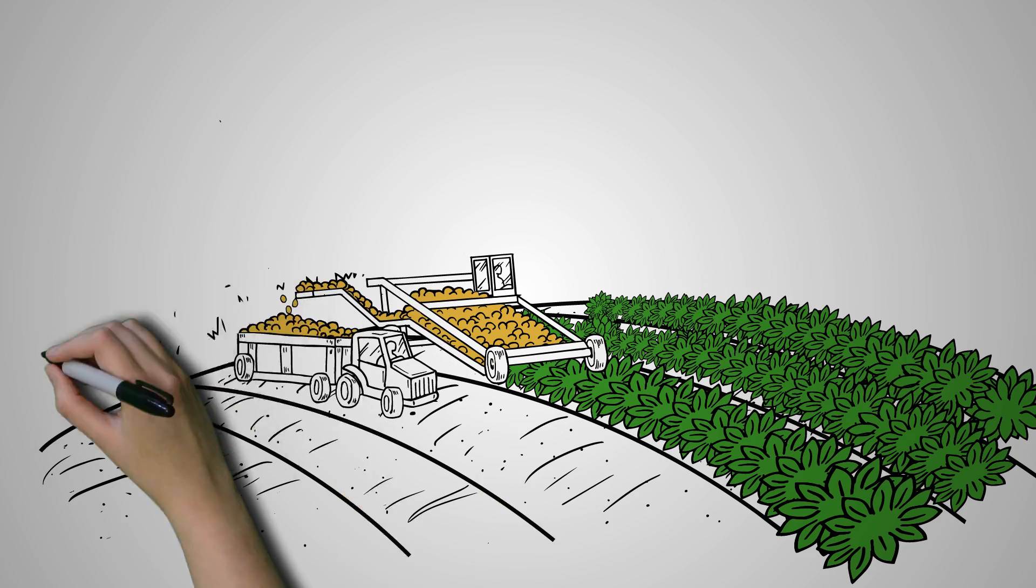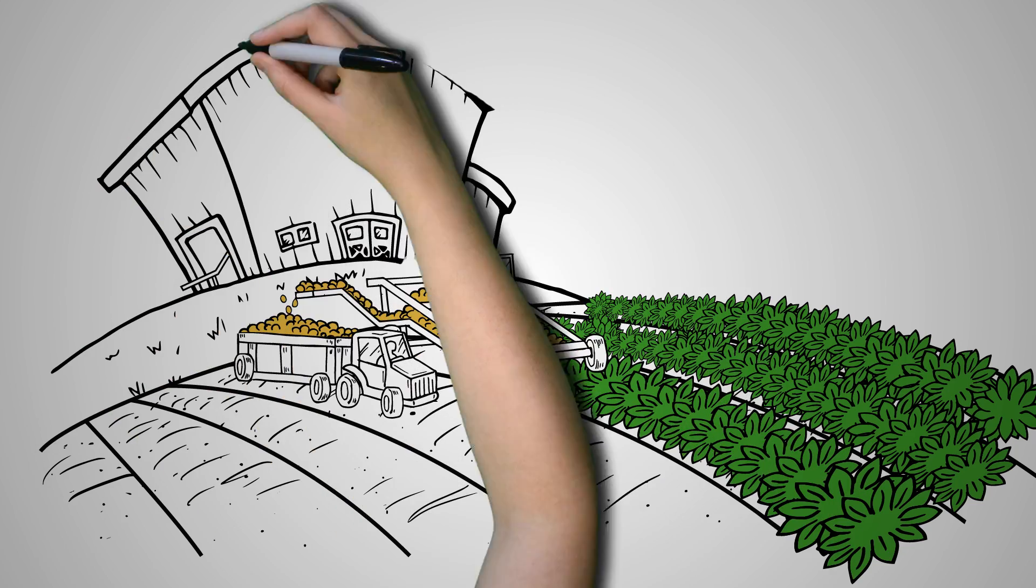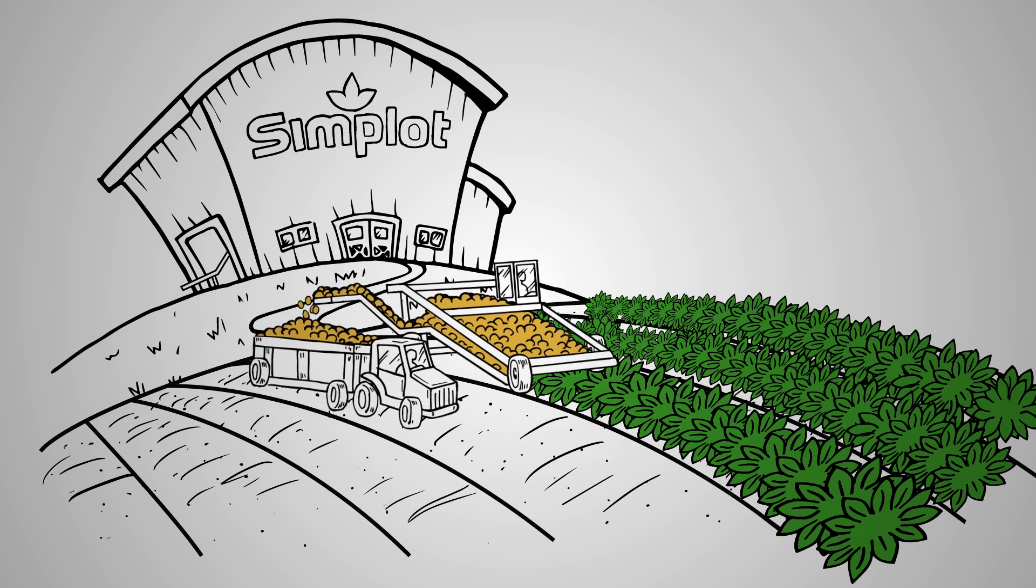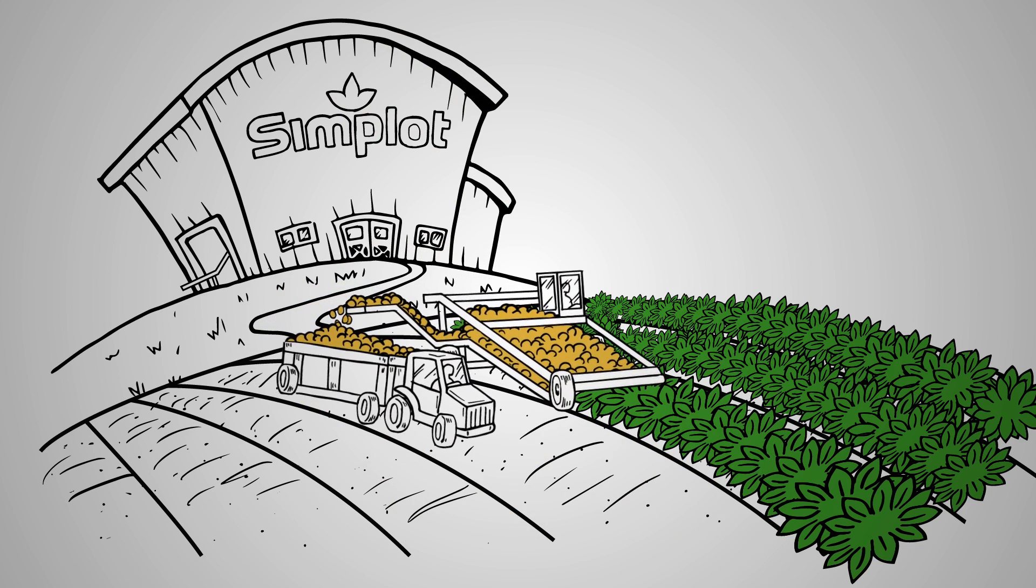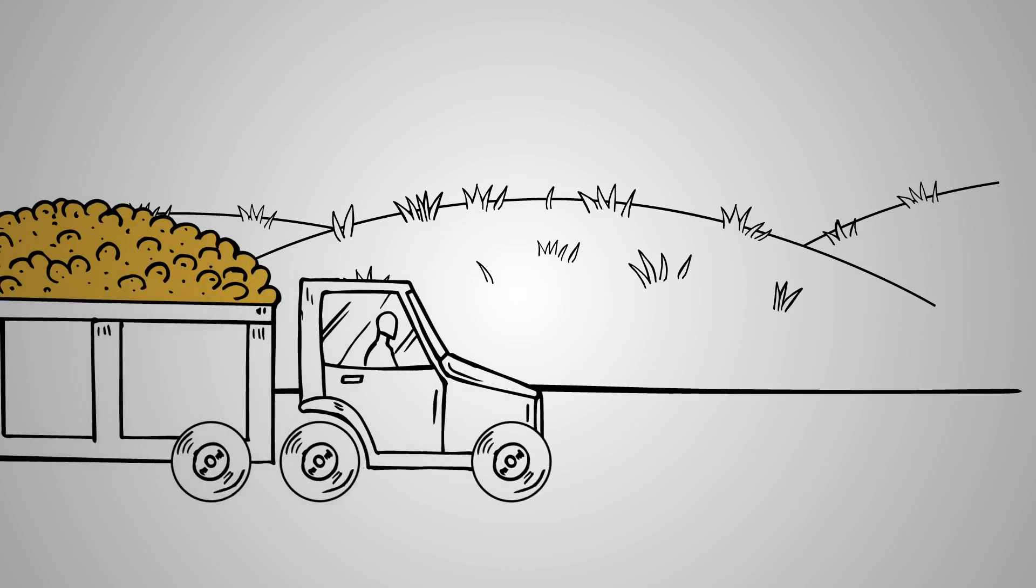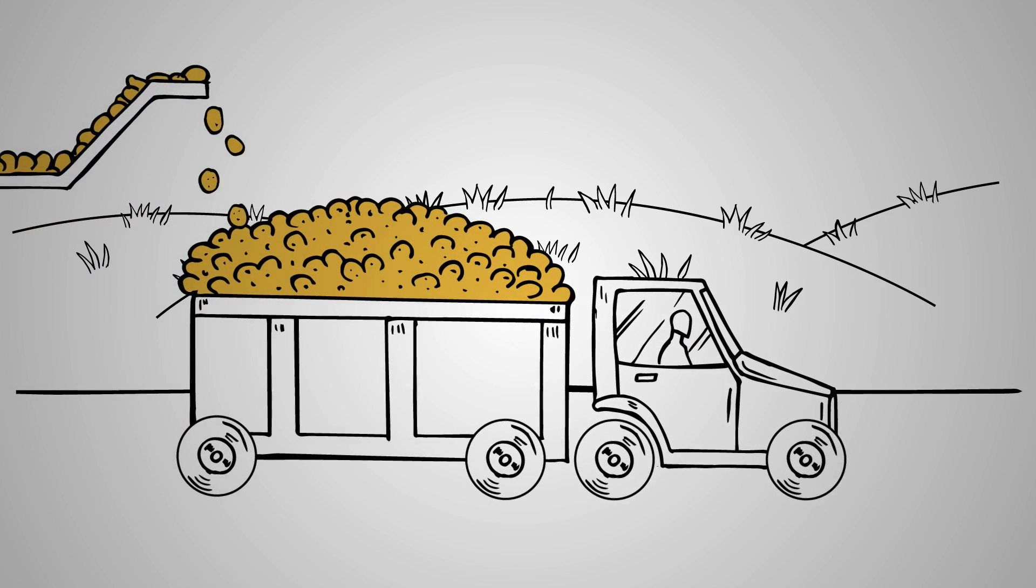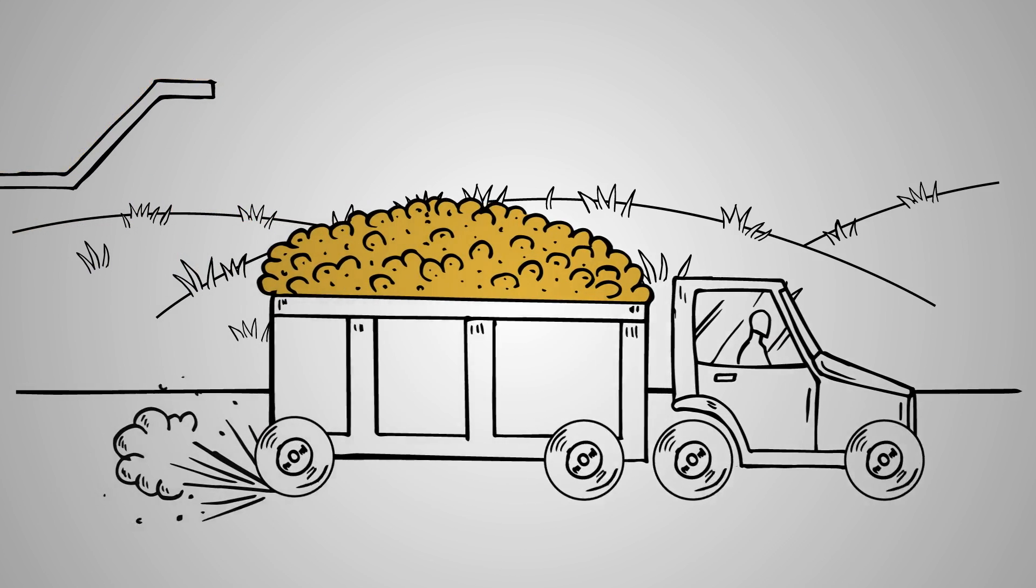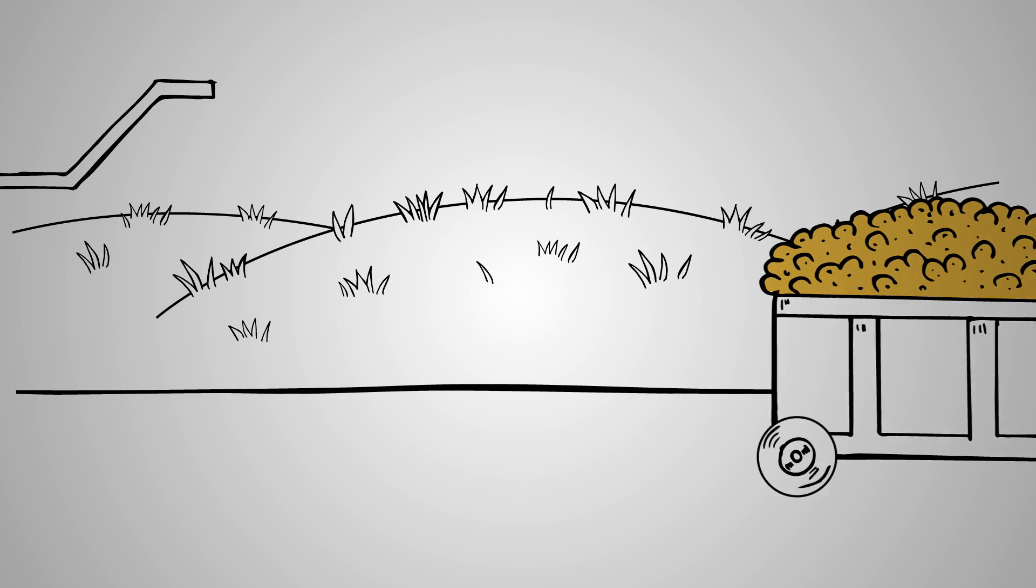At the JR Simplot Company, we've pioneered farming methods, new technologies and innovations in plant nutrition to feed a growing global population. We've led the way on advancing potato farming technology and plant science. We invented the dehydrated potato and the frozen french fry.